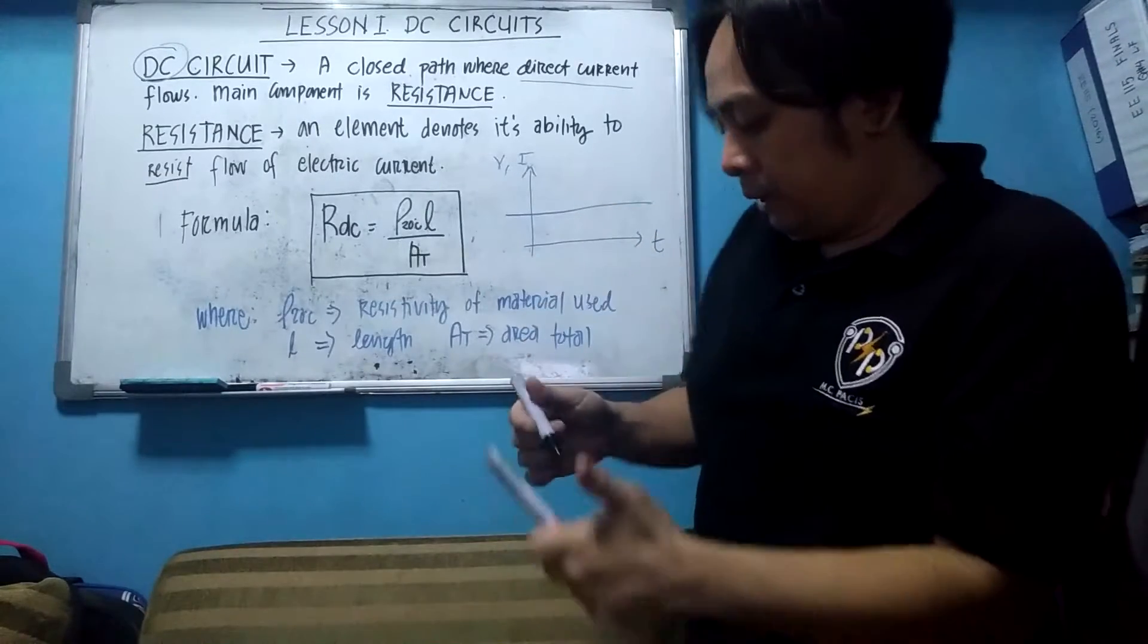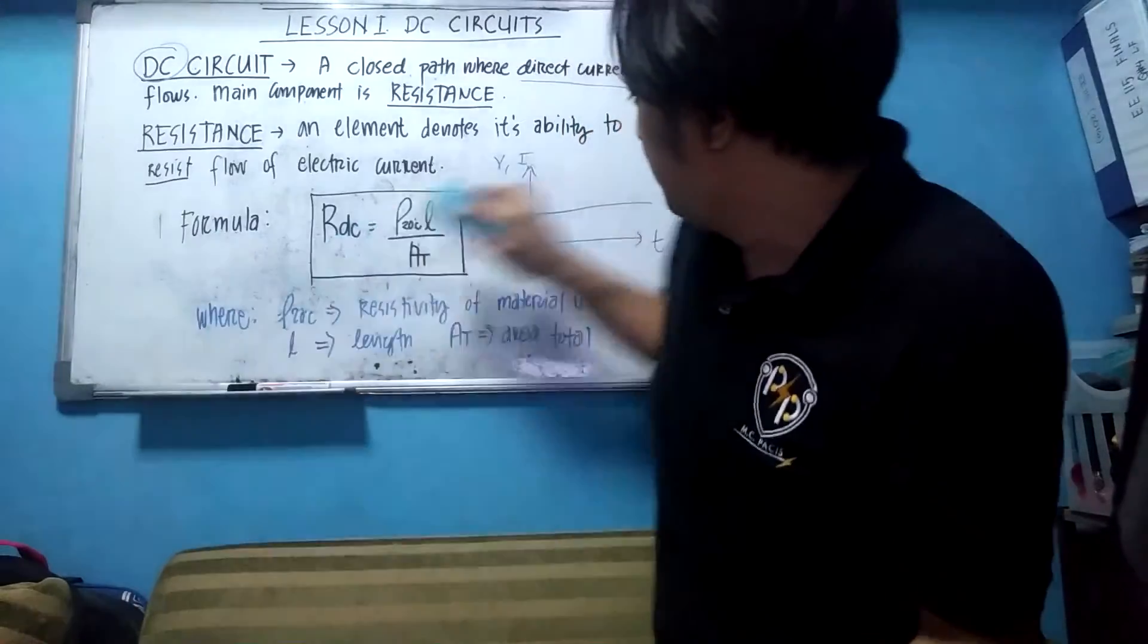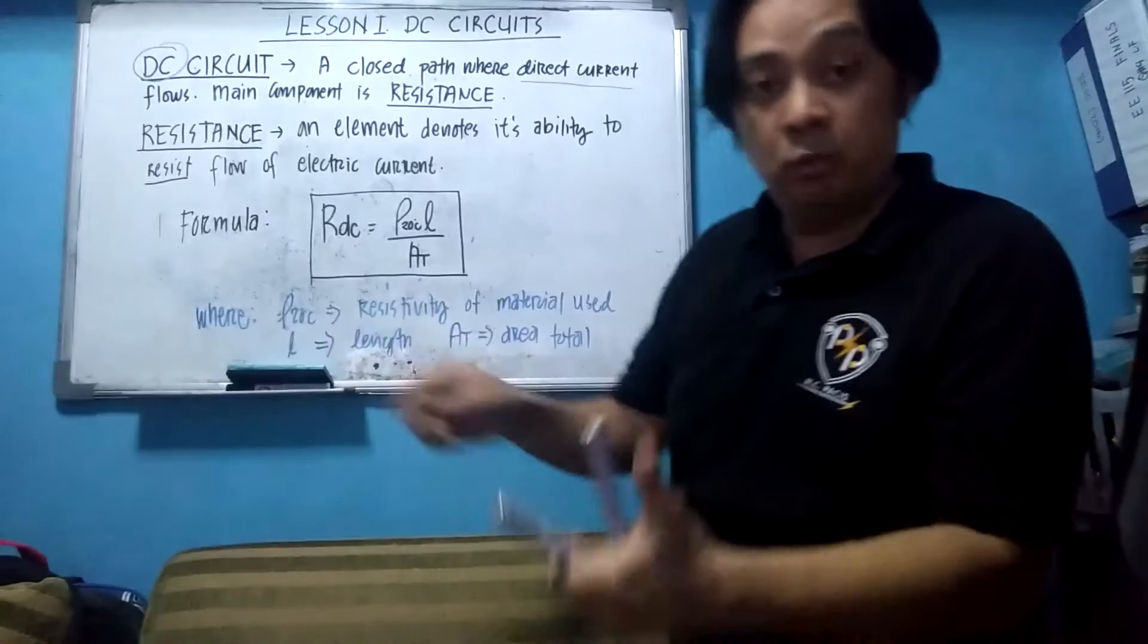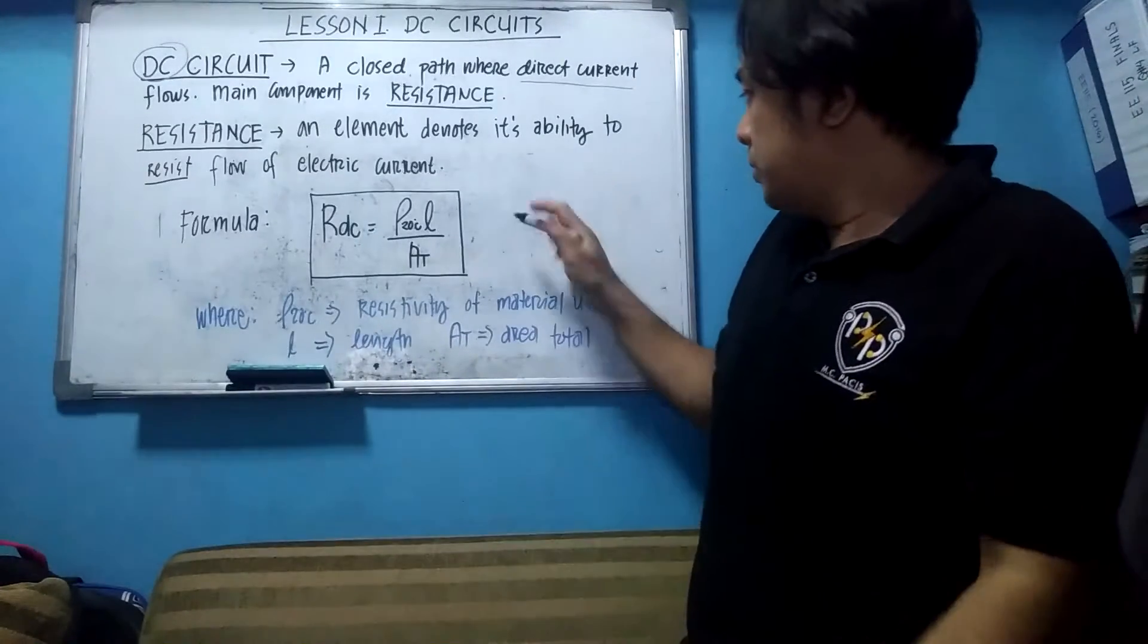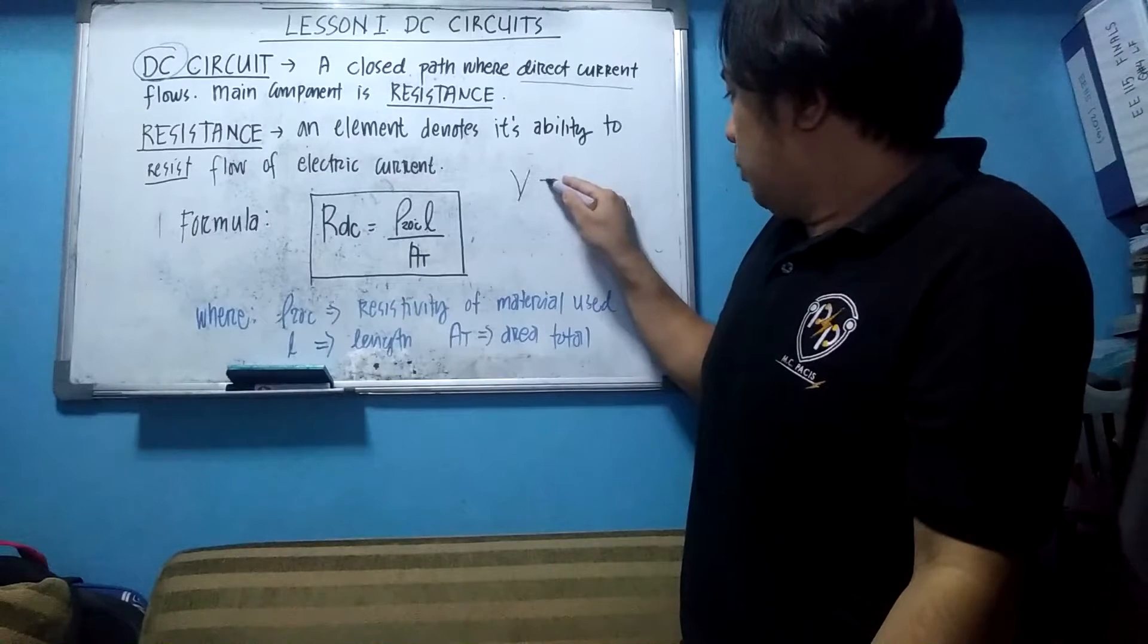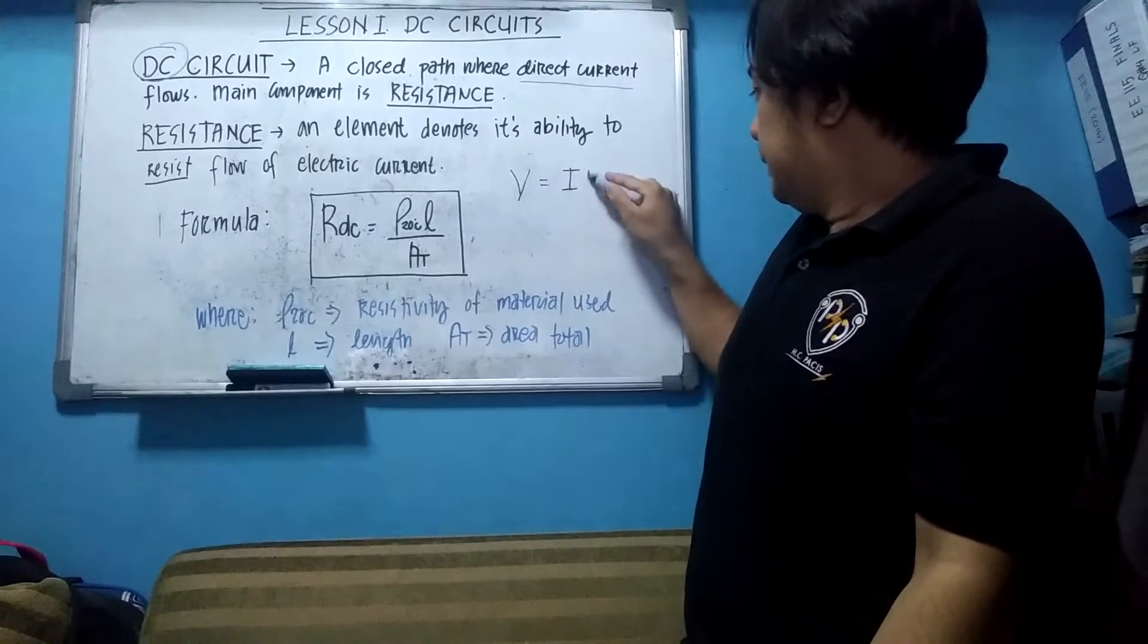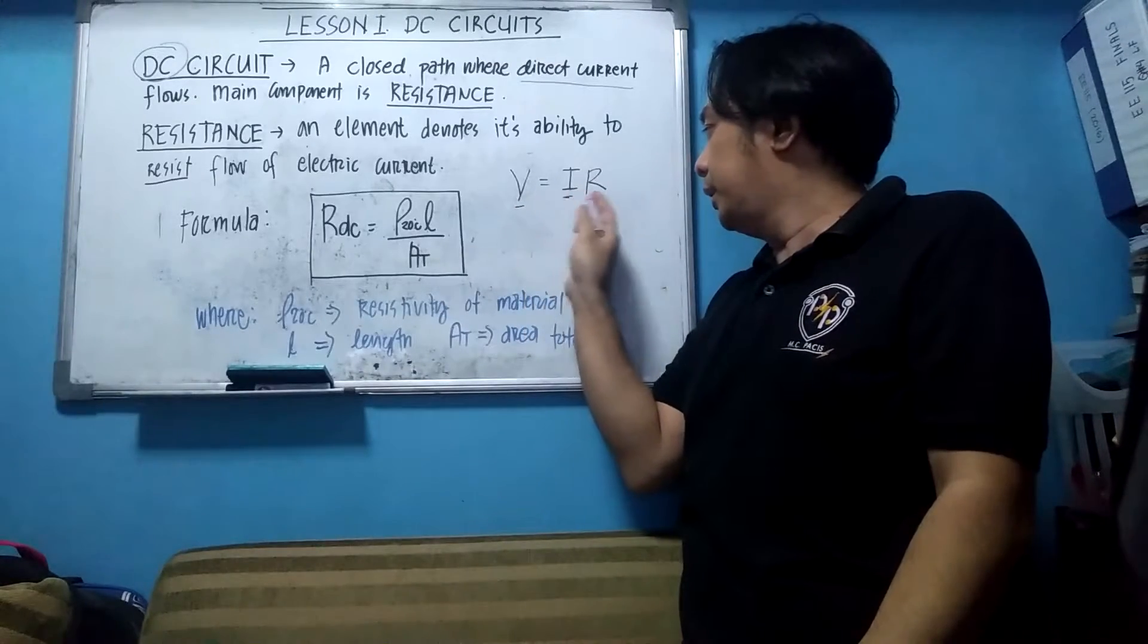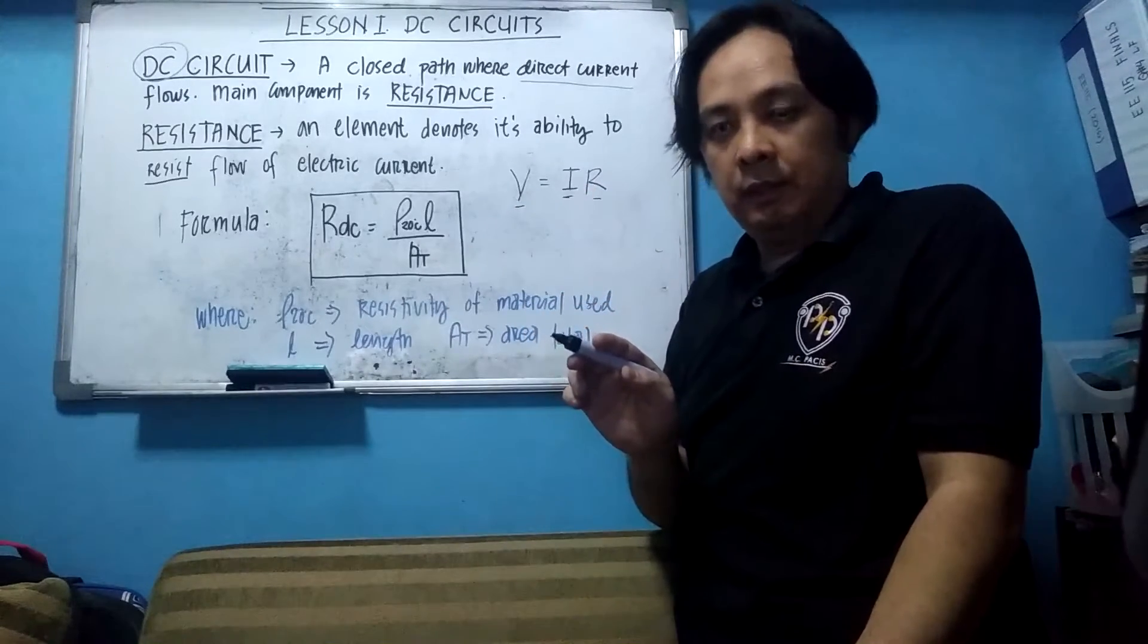We already know the Ohm's law, right? So the Ohm's law is the voltage is simply equal to the current times resistance R. So V is voltage, I current, R resistance.